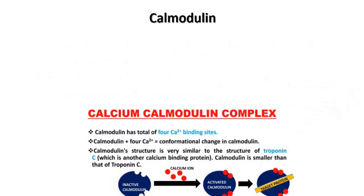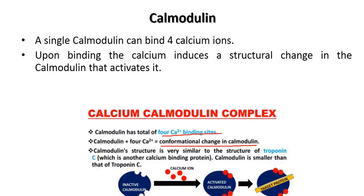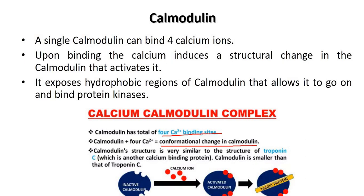A single calmodulin binds 4 calcium ions, inducing a structural change that activates it. Upon activation, calmodulin exposes its hydrophobic region, allowing it to bind to protein kinases. Once the protein kinases are bound, the conversion from inactive to active protein kinase completes the signal transduction cascade.